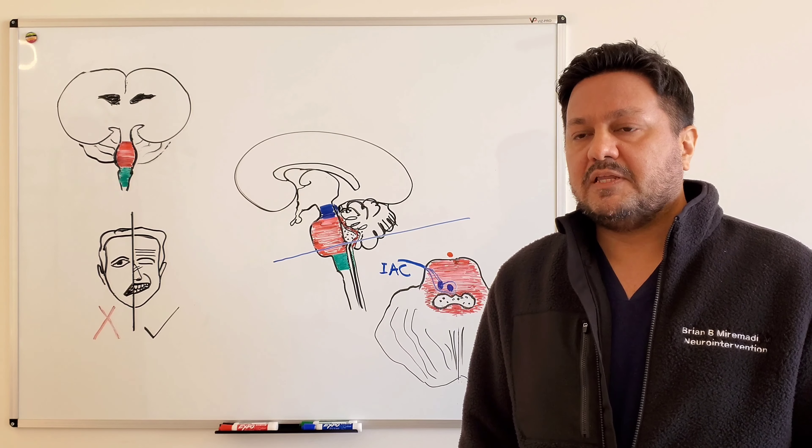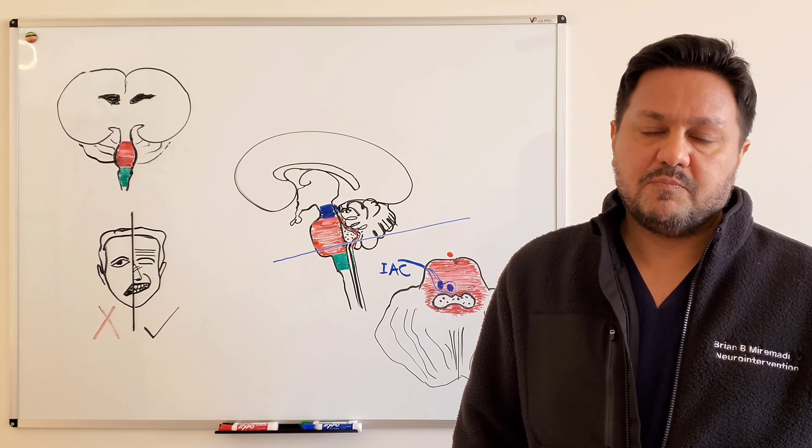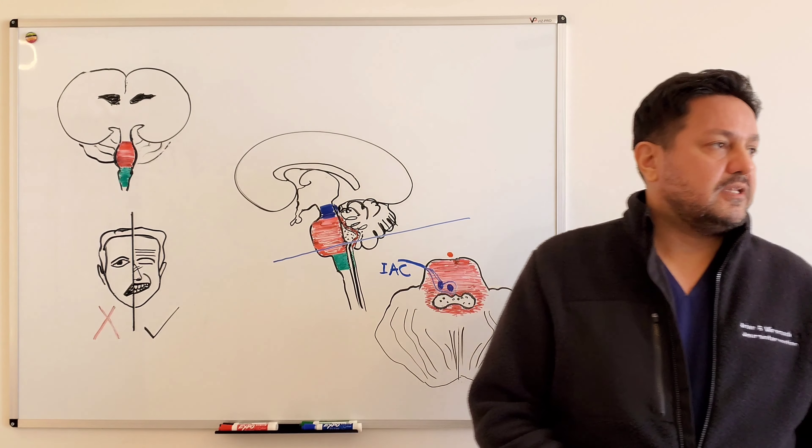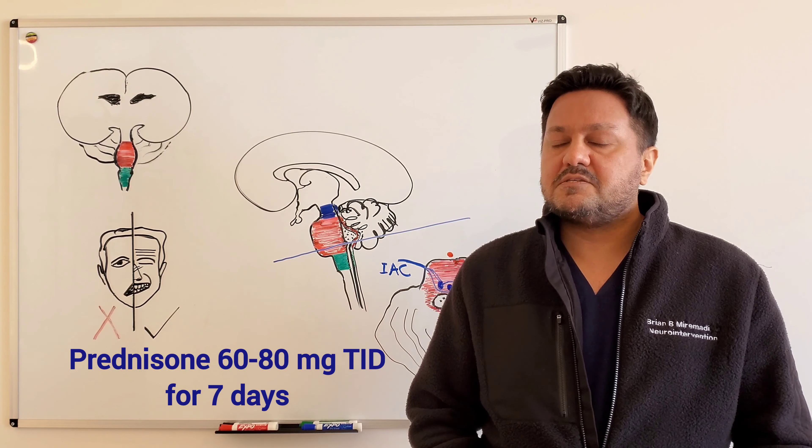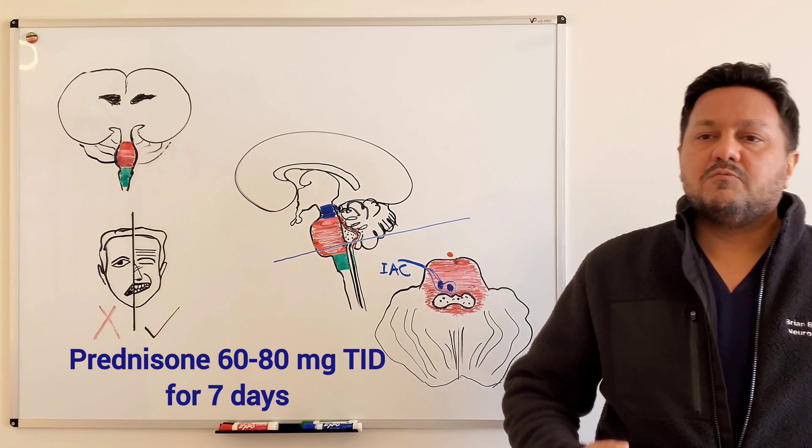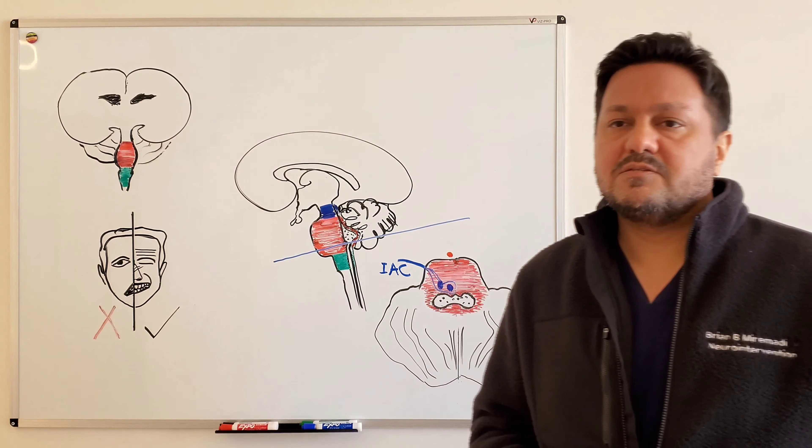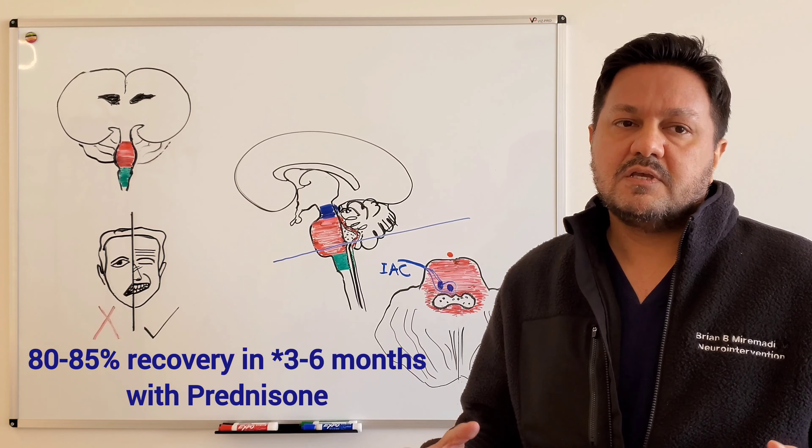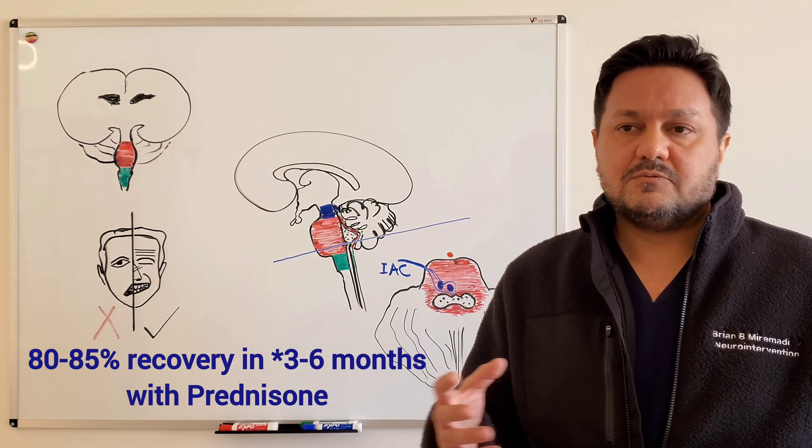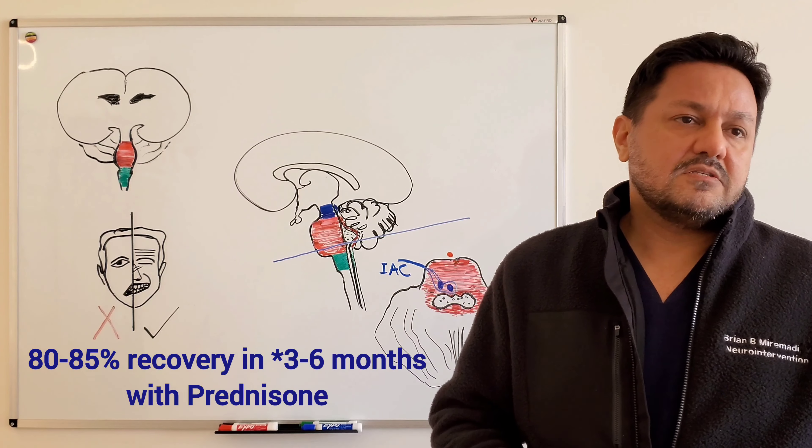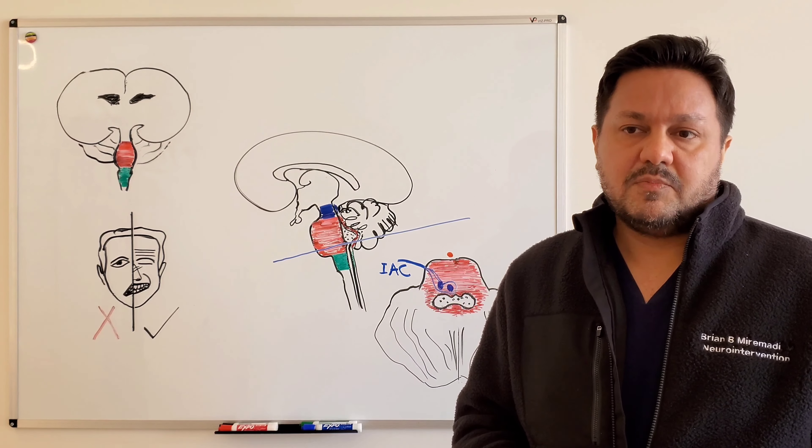What's the role of medications in treatment of Bell's palsy? Research has shown that prescribing prednisone at a dose of 60 to 80 milligrams three times a day for one week will improve the outcomes of Bell's palsy to about 80 to 85 percent improvement or recovery within three to eight weeks. So prescribing prednisone is recommended.